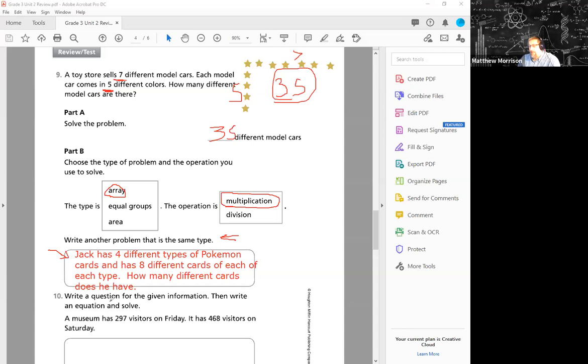Now here we have: write a question for the given information, then write an equation and solve. So we read, a museum has 297 visitors on Friday, it has 468 visitors on Saturday. Do we really know what they're asking? No. That's what you get to do. So you can decide, do you want it to be addition or subtraction? You can go either way.